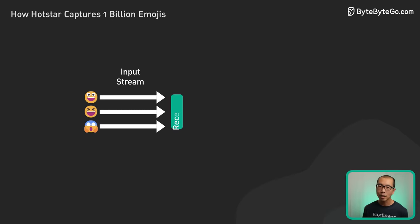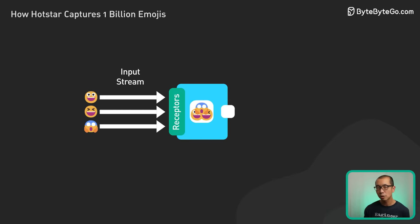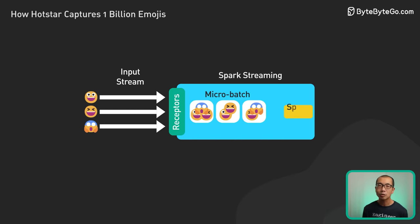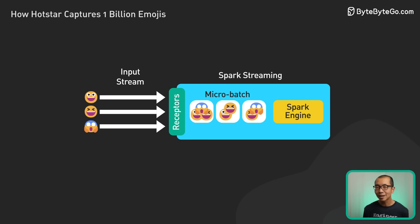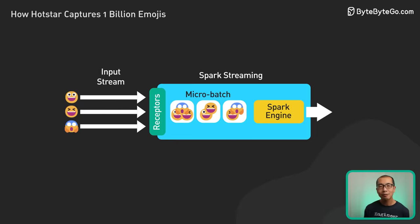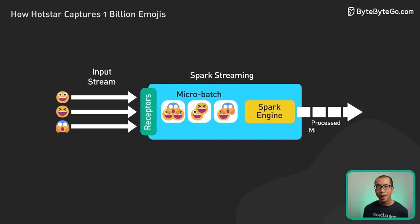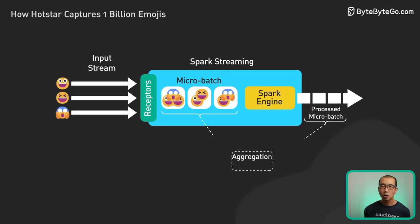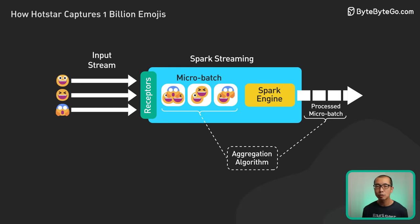Spark Streaming's micro-batch architecture is crucial here. It allows Hotstar to process data in small, manageable chunks. Instead of processing each reaction individually as it arrives, streaming divides the continuous data flow into small, time-slice batches. Spark then runs aggregation algorithms on the batch streaming data to determine emoji sentiment distributions across users, visualizing dynamic shifts in audience reactions.